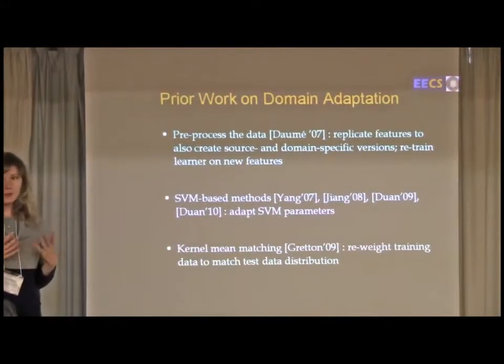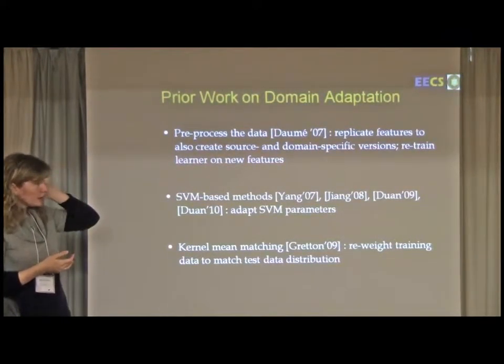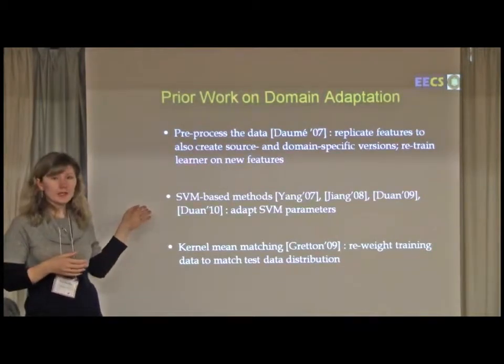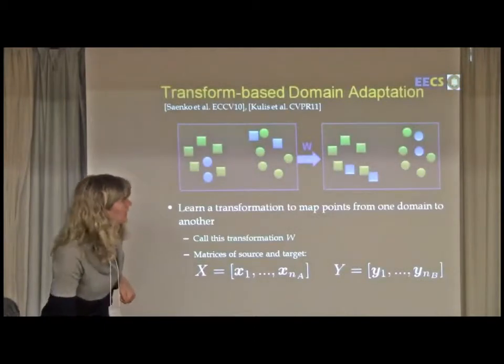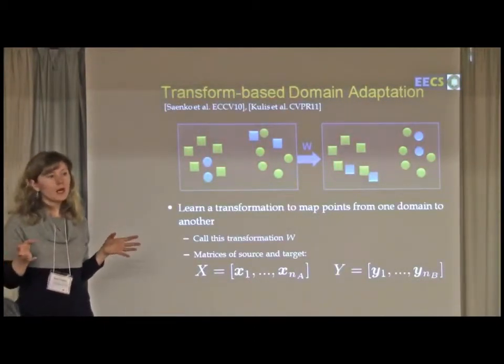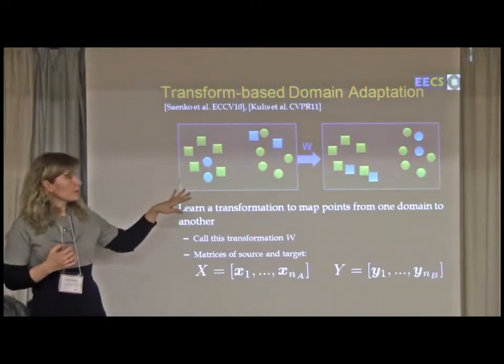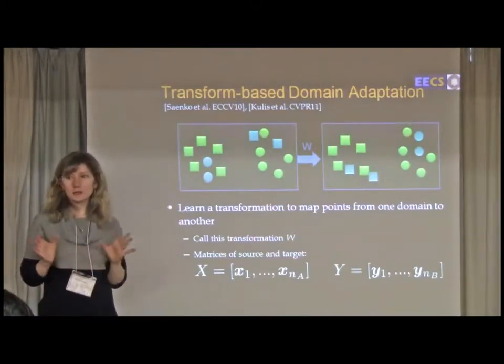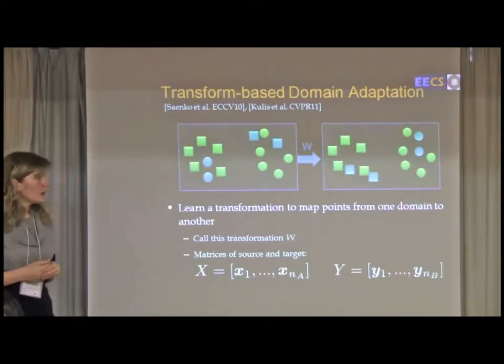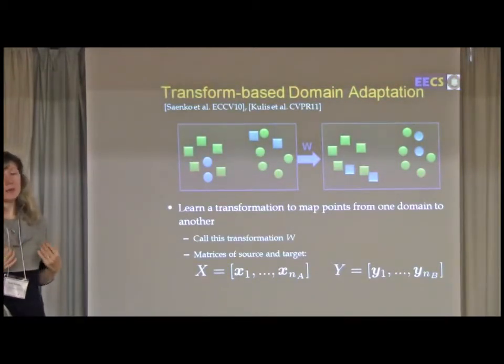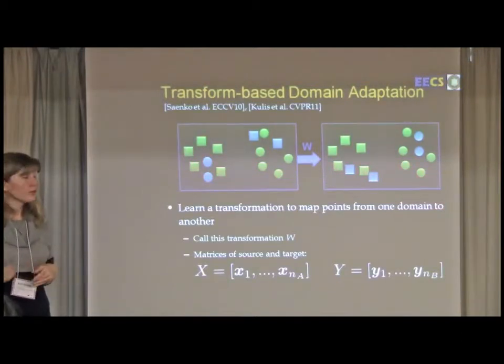Domain adaptation is well-studied. There's been a lot of work in NLP and there's been work in vision. In particular, there's some methods that adapt SVM parameters to new domains. But in our work, we're really interested in achieving domain adaptation by learning some sort of transformation on the feature space. The advantage here is that we can learn the transformation by using source data and a little bit of labeled target examples in some object categories and then transfer this to new tasks, so new categories. For example, we can learn the transform on cups and we can transfer it to people.